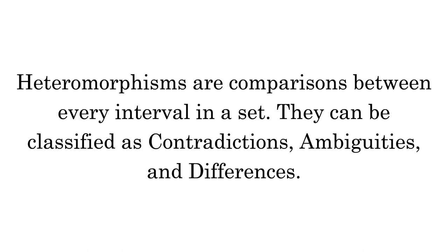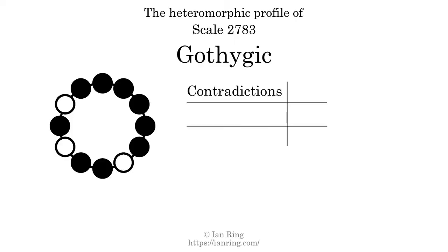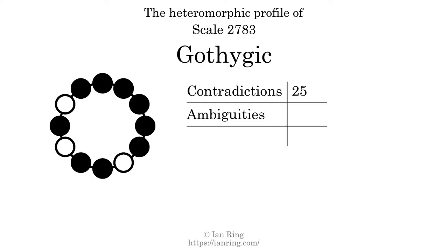Heteromorphisms are comparisons between every interval in a set. They can be classified as contradictions, ambiguities, and differences. A contradiction exists when a small generic interval has a bigger specific size than a larger generic interval — for example, if a generic third interval has a larger size in semitones than a generic fourth interval. The number of contradictions in this scale is 25. An ambiguity exists when two intervals have the same specific size but different generic intervals — for example, if a generic fourth and a generic third interval are the same size in semitones. The number of ambiguities in this scale is 109.